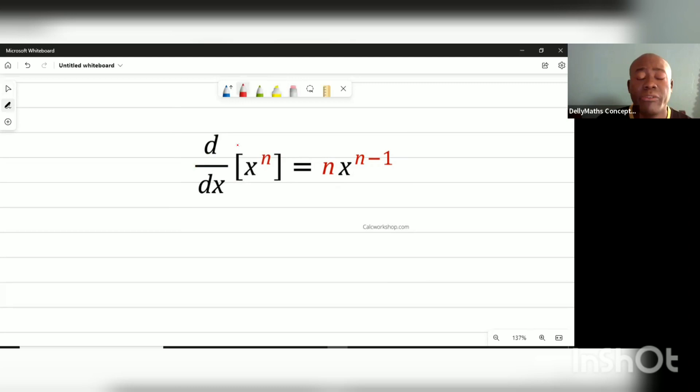Can be easily done by: here's my power of n and the power of n becomes a coefficient of that term and then we reduce that power by one. That is the basic idea - the original power becomes a coefficient and then we reduce the power by one.